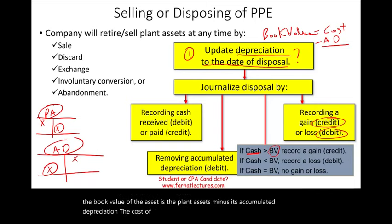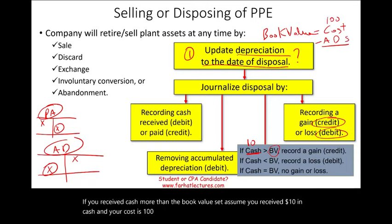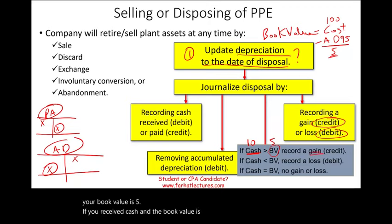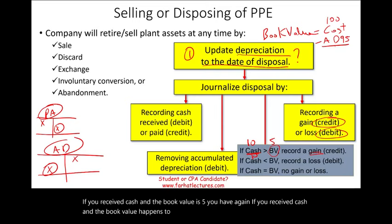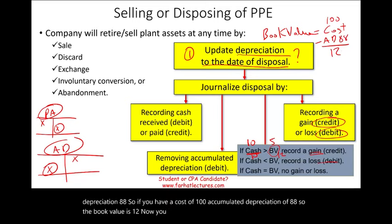For example, assume you receive $10 in cash and the cost is $100 with accumulated depreciation of $95, giving a book value of $5. Since cash ($10) exceeds book value ($5), you have a gain. Alternatively, if accumulated depreciation is $88, book value is $12, and you only received $10 cash, you have a $2 loss. If cash equals book value exactly, you have no gain and no loss.